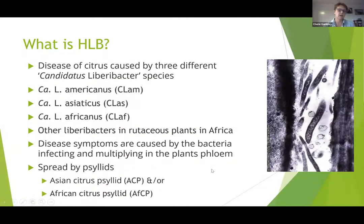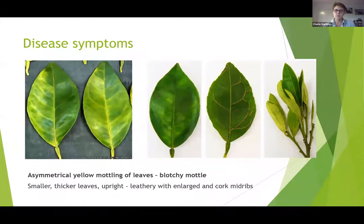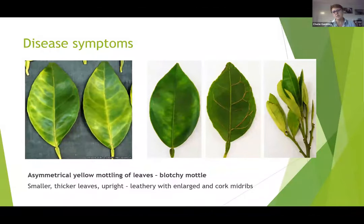The bacteria is spread by psyllids — the Asian citrus psyllid and/or the African citrus psyllid. What's really typical with HLB is the asymmetrical yellow mottling of the leaves, which is sometimes called blotchy mottle. You can also get smaller, thicker leaves, an upright habit to the plant growth, and the midribs of the leaves can be corky and enlarged.